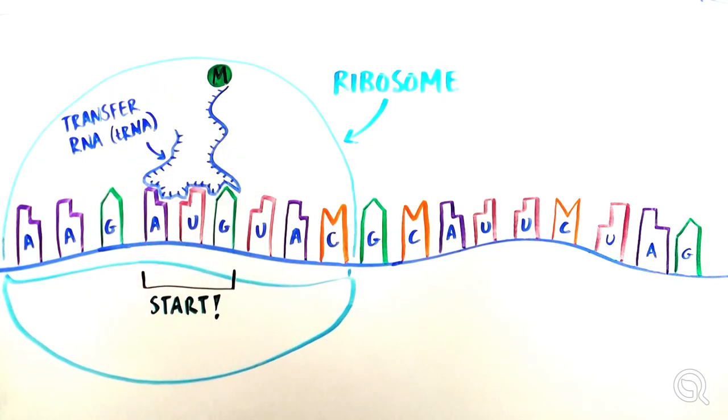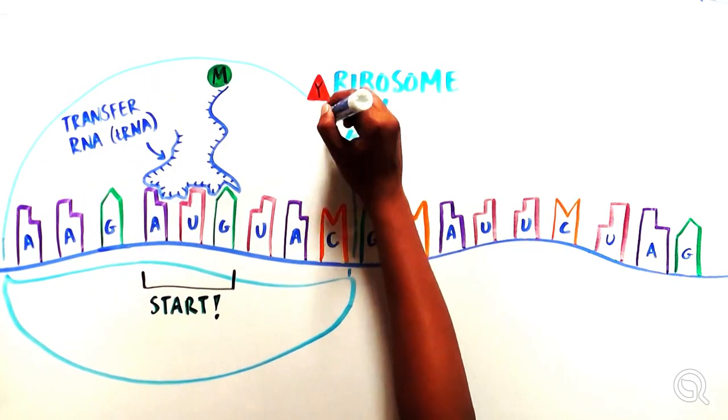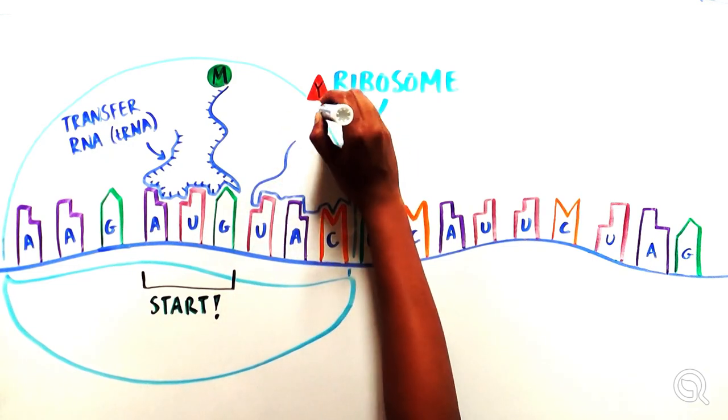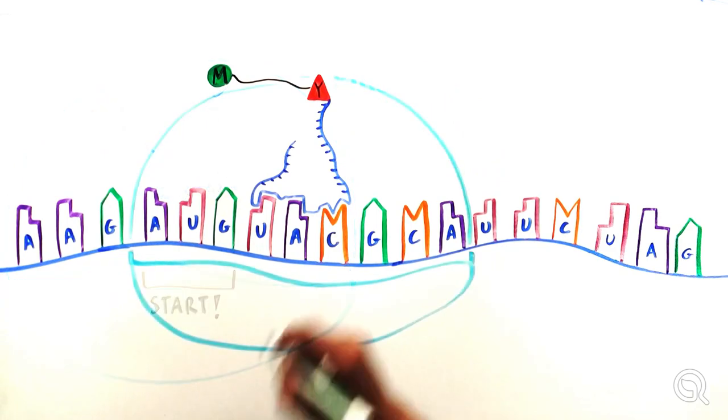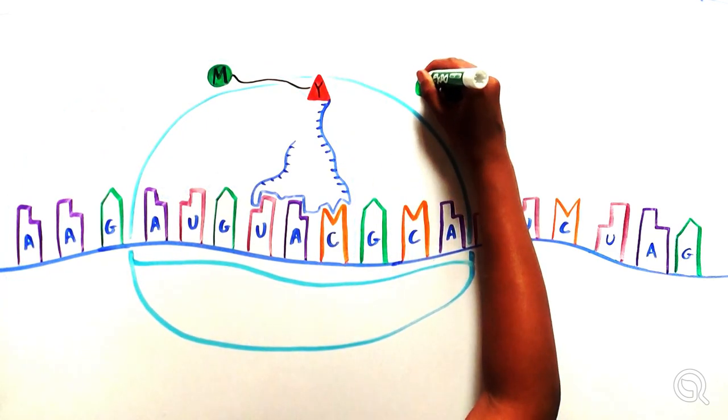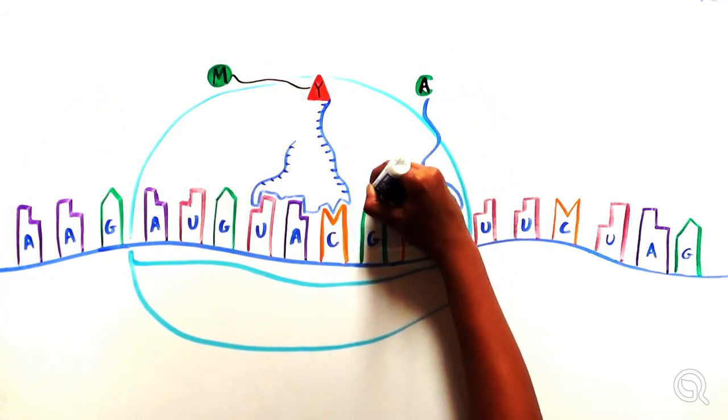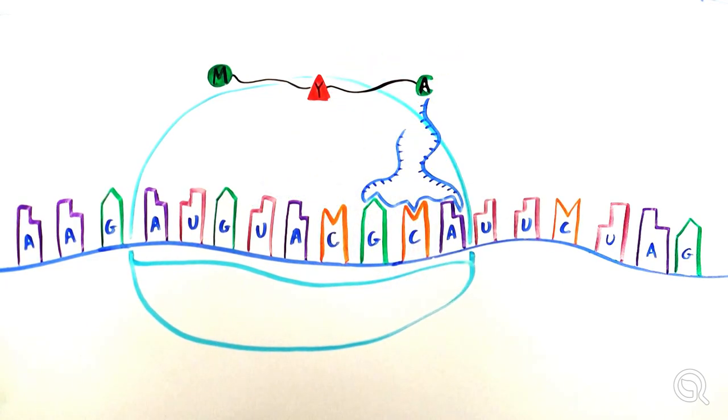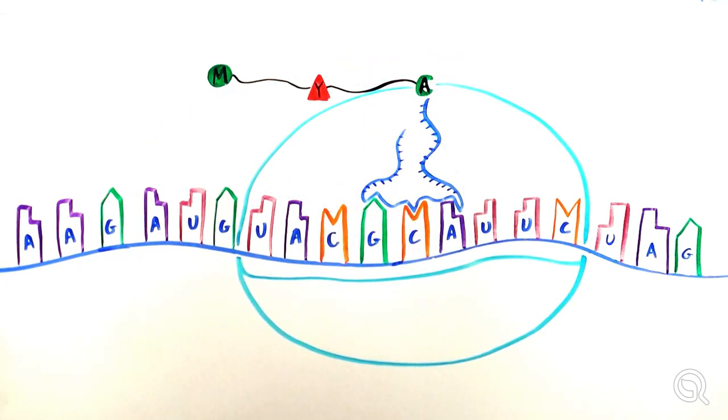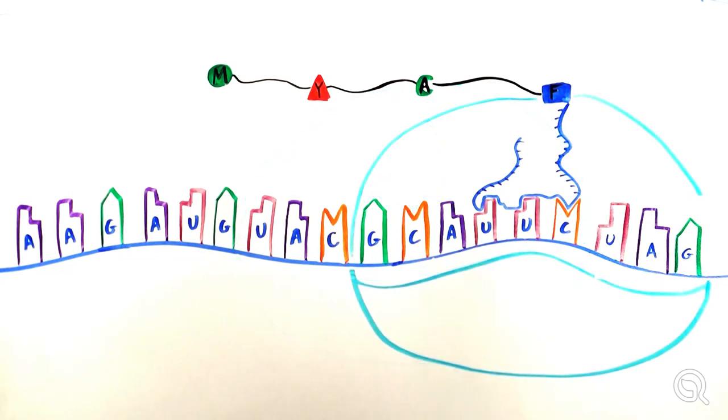When the tRNA brings the amino acid that matches the next codon in the mRNA, the amino acid attaches to the previous one, which starts the growing chain of amino acids. The process of attaching the amino acid to the previous one in the chain disconnects the tRNA from the amino acid, and the naked tRNA leaves the ribosome, and the process continues.